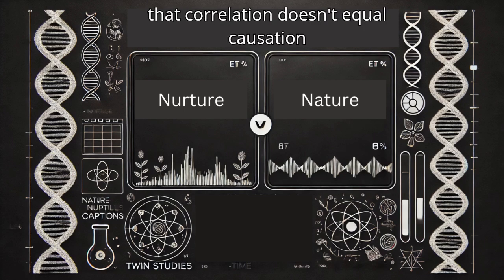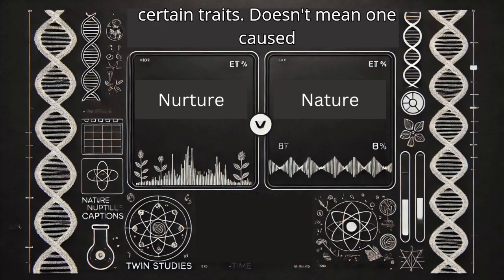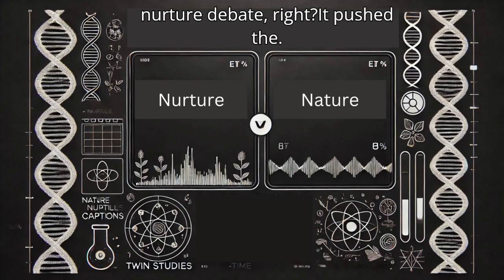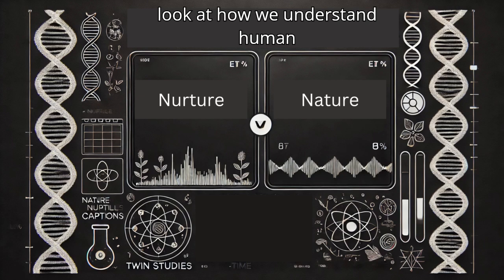Critics point out that it might not be accurate to extrapolate these findings to the entire population. It's a good reminder that correlation doesn't equal causation. Just because two things occur together, in this case genetic similarity and certain traits, doesn't mean one caused the other. That's the core of scientific inquiry. The Minnesota twin study, despite the criticisms, really made people rethink the nature versus nurture debate.